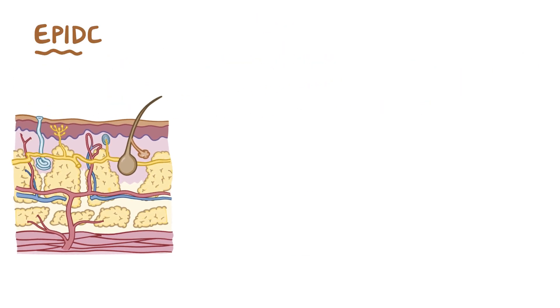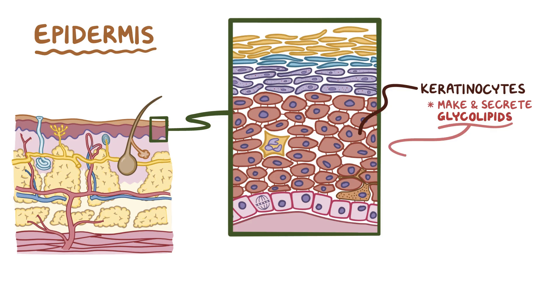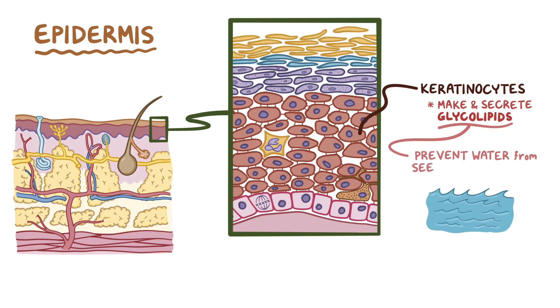The epidermis forms the thin outermost layer of skin, and it's made up of several layers of keratinocytes, which make and secrete glycolipids, which help to prevent water from easily seeping into and out of the body.